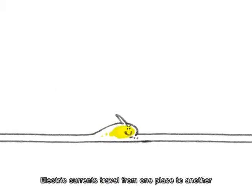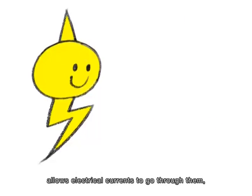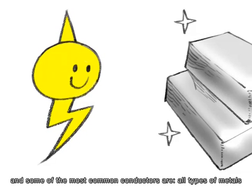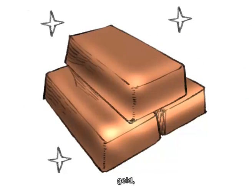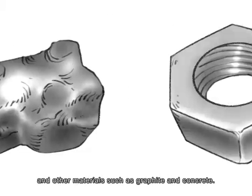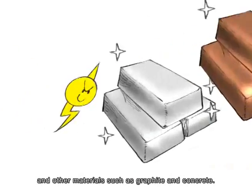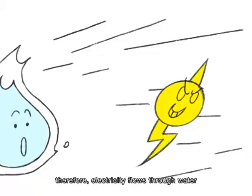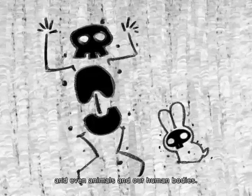Electric currents travel from one place to another through conductors. Conductors are anything that allows electrical currents to go through them. Some of the most common conductors are all types of metals — silver, copper, gold, aluminium, iron and steel — and other materials such as graphite and concrete. Liquid is also a strong conductor. Therefore, electricity flows through water and even animals and our human bodies.